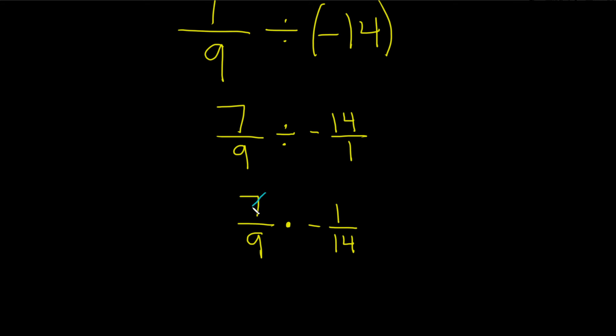7 goes into 7 one time. So we cross it out and put a 1. 7 goes into 14 two times. So we cross it out and put a 2.